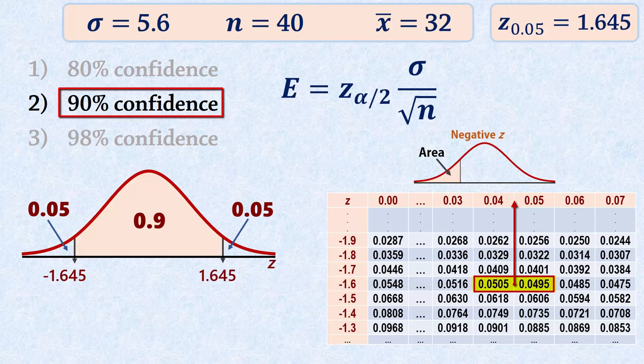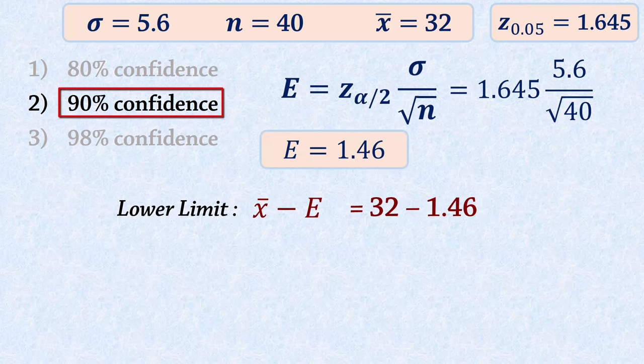And that gives us a margin of error of 1.46. The lower limit of the 90% confidence interval is thus 30.54, and the upper limit is 33.46.